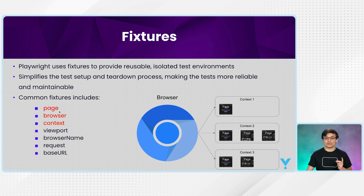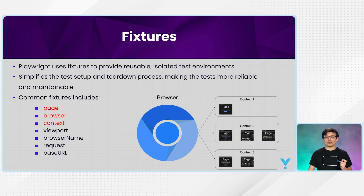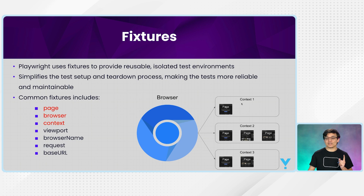There are seven fixtures in the Playwright Test package. For UI testing, only the first three are needed: the page fixture, the browser fixture, and the context fixture. The other fixtures, such as request and base URL, are used for API testing. In this course, we will mainly focus on UI, so these three fixtures are what you will learn.